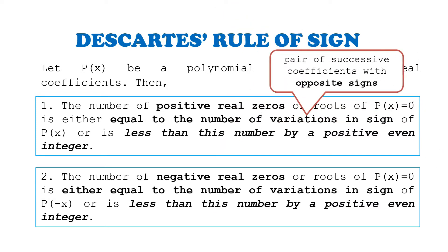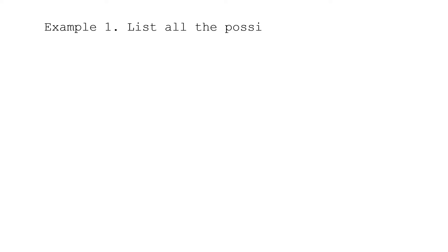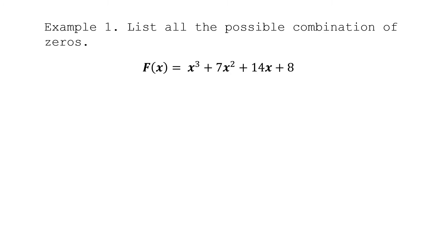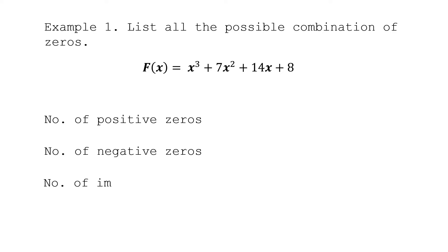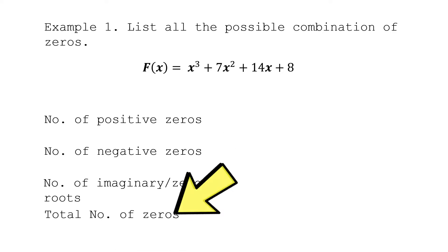What do we mean by variations in sign? When we say variations in sign, it refers to a pair of successive coefficients with opposite signs. For our first example, we will list all the possible combinations of zeros for the given polynomial function — identifying how many positive zeros, how many negative zeros, how many imaginary or zero roots, and the total number of zeros. The first step is to identify the total number of zeros.